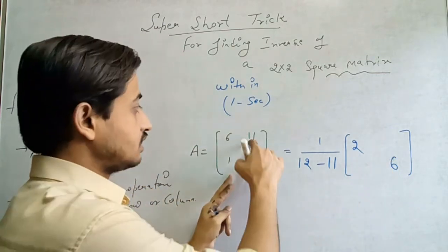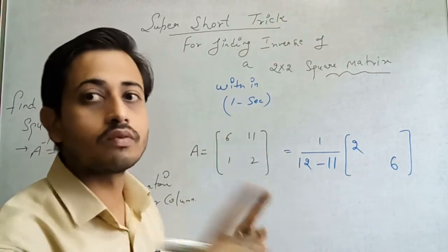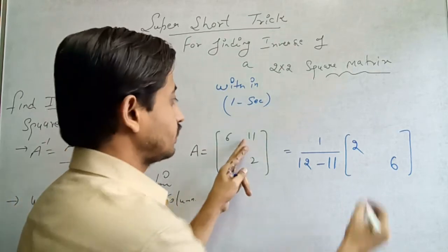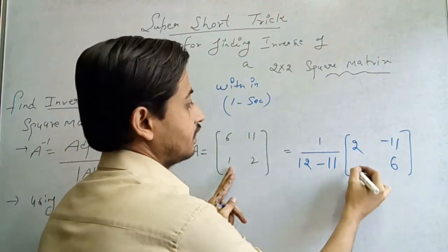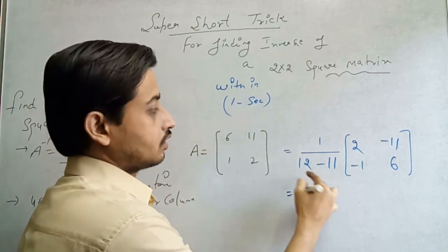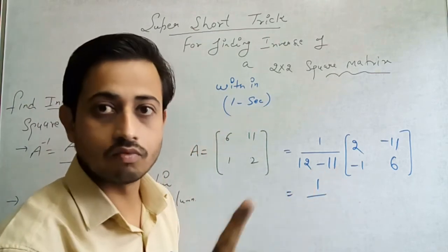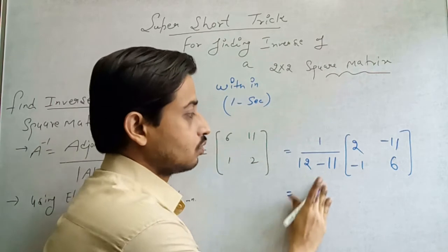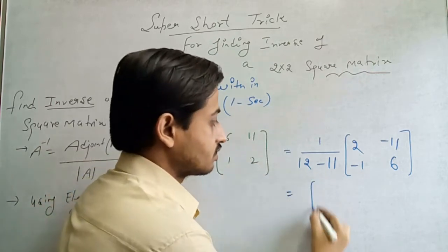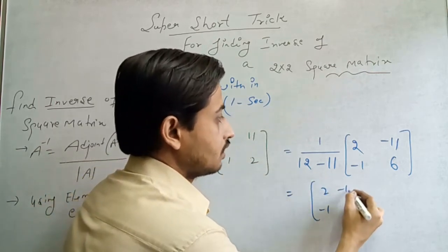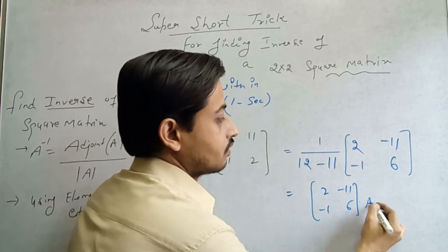And now, these elements will remain the same but you have to change the sign. It means we get negative 11, negative 1. If you solve that, 12 minus 11 is 1. 1 by 1, which is equal to 1. Our answer is 2, minus 1, minus 11, 6. This is our answer.